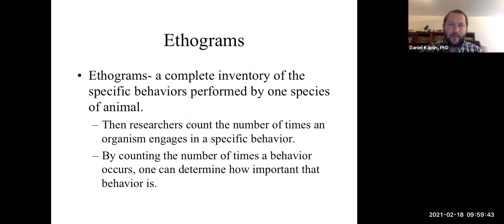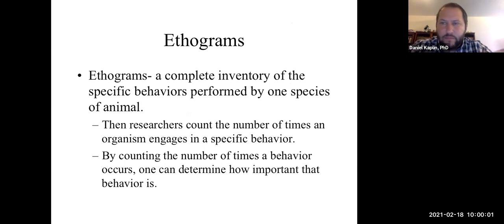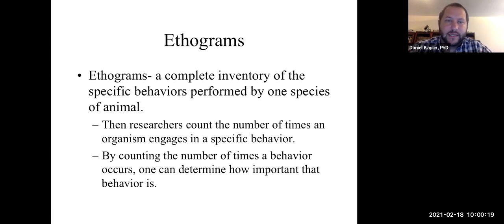An ethogram is an inventory of all the behaviors that are important to a species of animal. Once you know the essential behaviors, you can actually count the number of times that organism behaves in that specific behavior, and by frequency counts determine the relative importance of that behavior. We do that a lot in animal models — avian models, fish models, and things like that — but we could do it in a human model too.